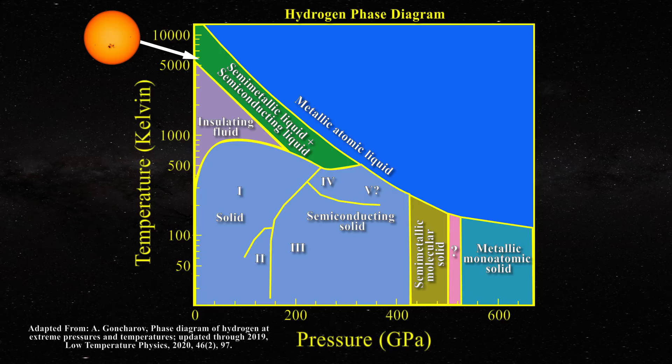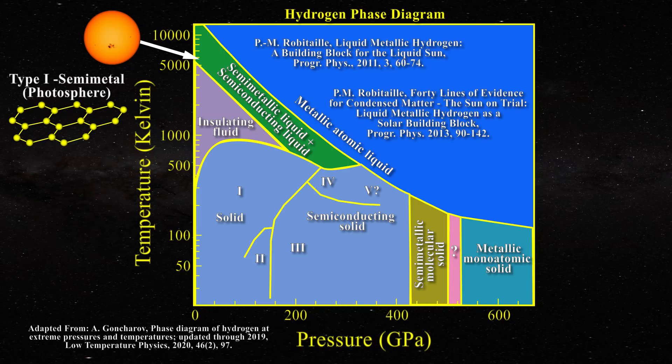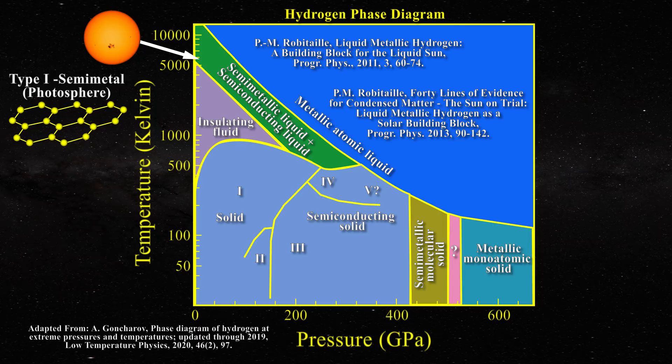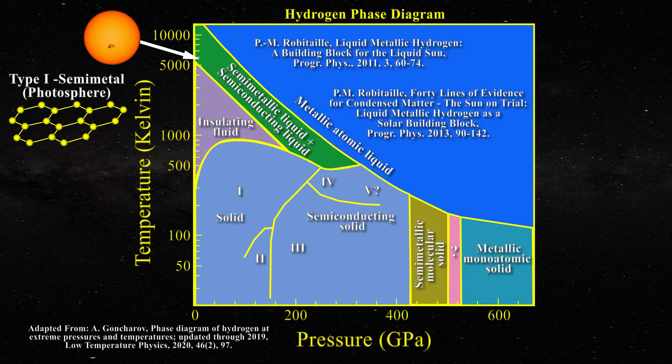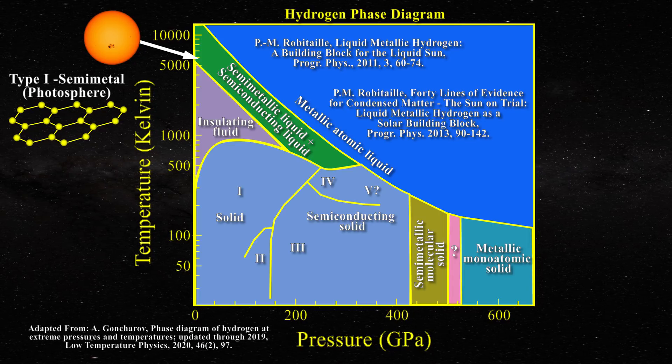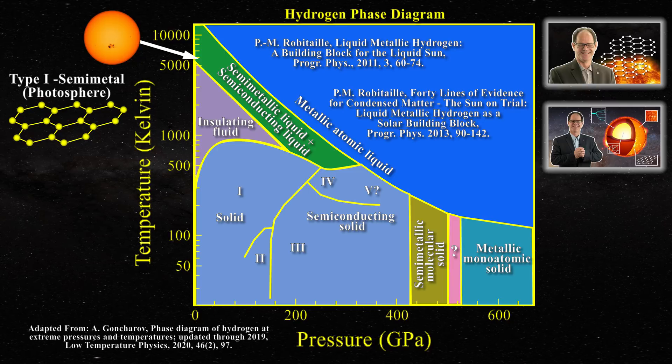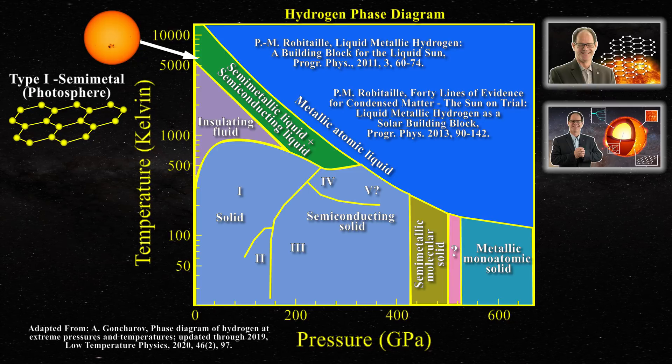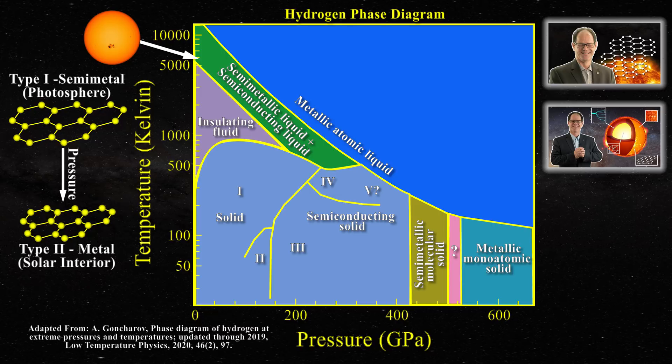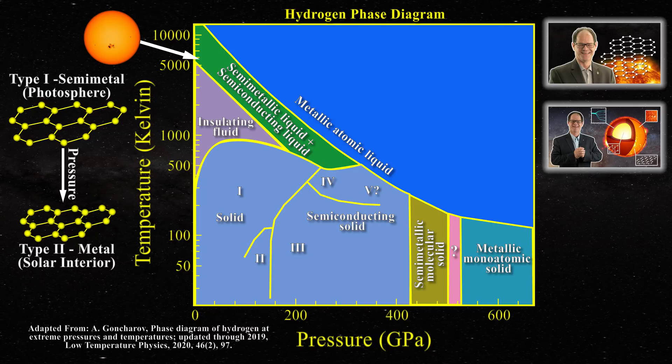I have stated that the photosphere should correspond to hexagonal planar type 1 metallic hydrogen, which acts as a semi-metal. This has been presented in these papers and videos linked below. As pressures are increased within the solar interior, one would get a fully metallic state. This is easy to see on the diagram.